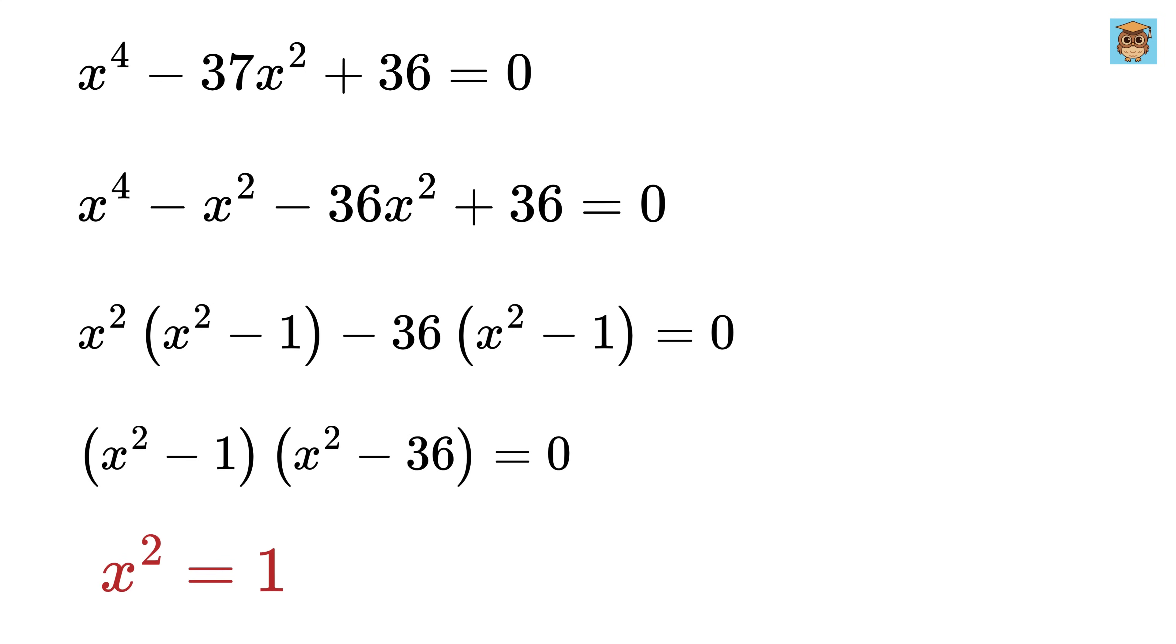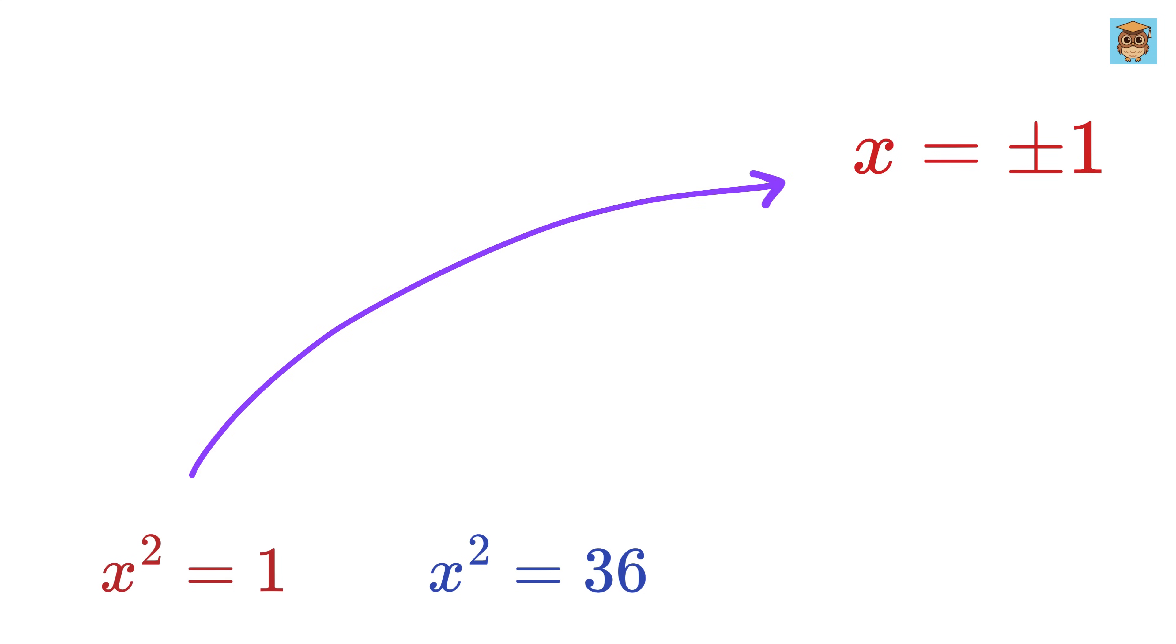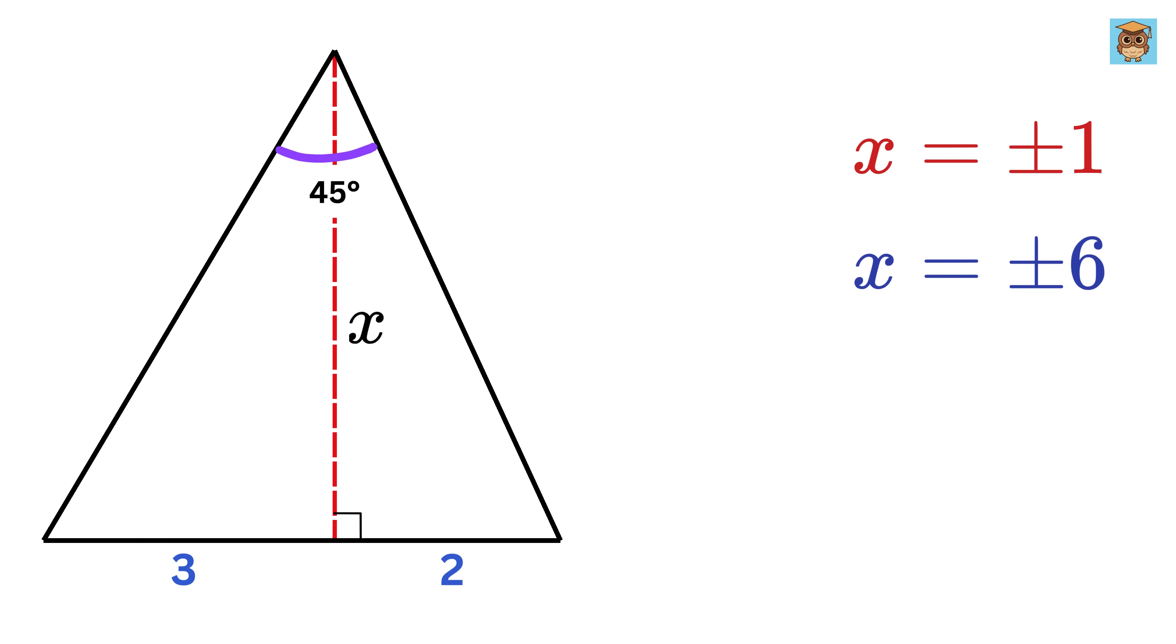So this equation will have factors as x squared minus 1 times x squared minus 36. This gives x squared equals 1 and x squared equals 36. So this gives x equals plus minus 1 and this gives x equals plus minus 6. But x cannot be negative because it is the side length of this triangle, and therefore x equals either 1 or 6.